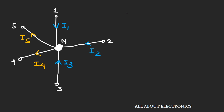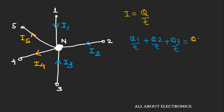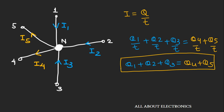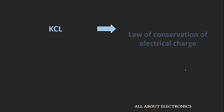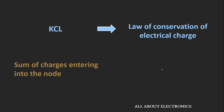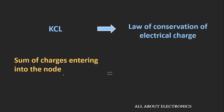Now, current I can also be defined as Q divided by T, that is the rate at which the charge is flowing. So we can write this equation as Q1/T + Q2/T + Q3/T = Q4/T + Q5/T, which simplifies to Q1 + Q2 + Q3 = Q4 + Q5. So we can see that the charge entering the node equals the charge leaving the node. Therefore, Kirchhoff's Current Law is nothing but the law of conservation of electrical charge.